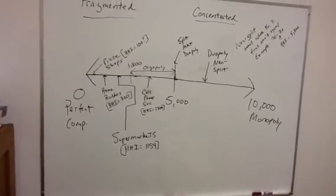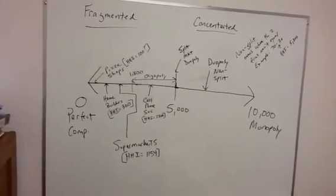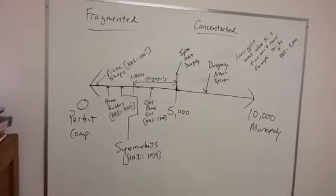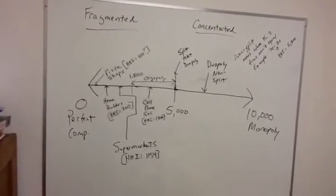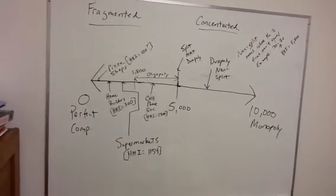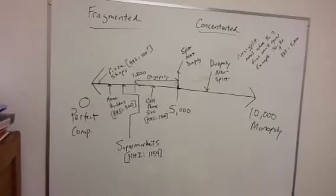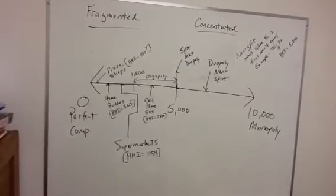Cell phone service, which is something that we've talked about a lot this semester, is about 2,800. And, of course, we know that the antitrust authorities will become interested in a merger if the pre-merger is 1,800 or more, and the delta between pre-merger and post-merger is greater than 100.